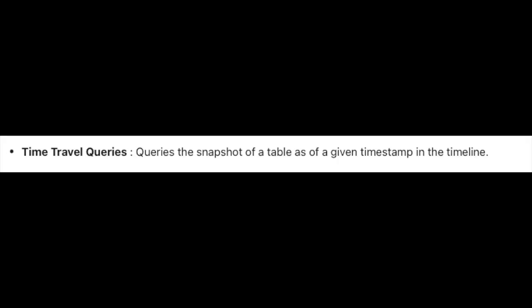The next query type is time travel queries — one of the coolest features of Apache Hudi. With time travel you can query the data as it existed at a specific point in time. This is like having a time machine for your data, making it easy to analyze historical snapshots and trends.